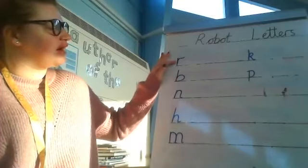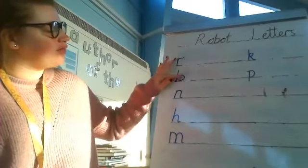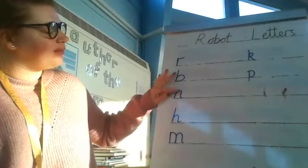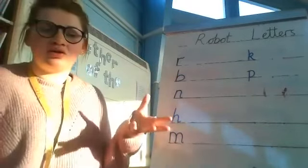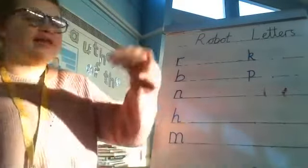So all of these go down, back up and give an arm. So down, back up and round. Down, back up, just like that. This is why they're called robot letters because you go down the robot and then you need to make the rest of the letter.